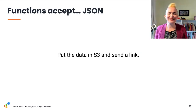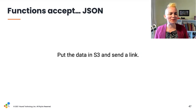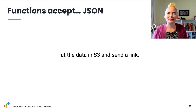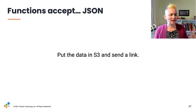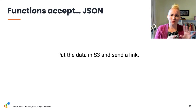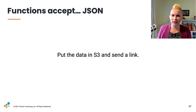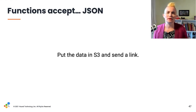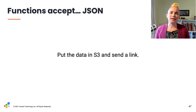We also found a peculiar restriction: the functions can't return more than about six megabytes of data. So put the return value in S3 and respond with a link. Similarly, when sending input to the functions, they only want JSON — and it's not even exactly JSON, it's whatever AWS's Lambda JSON parser has decided is JSON. Don't deal with it. Put the input in S3 and send a link.